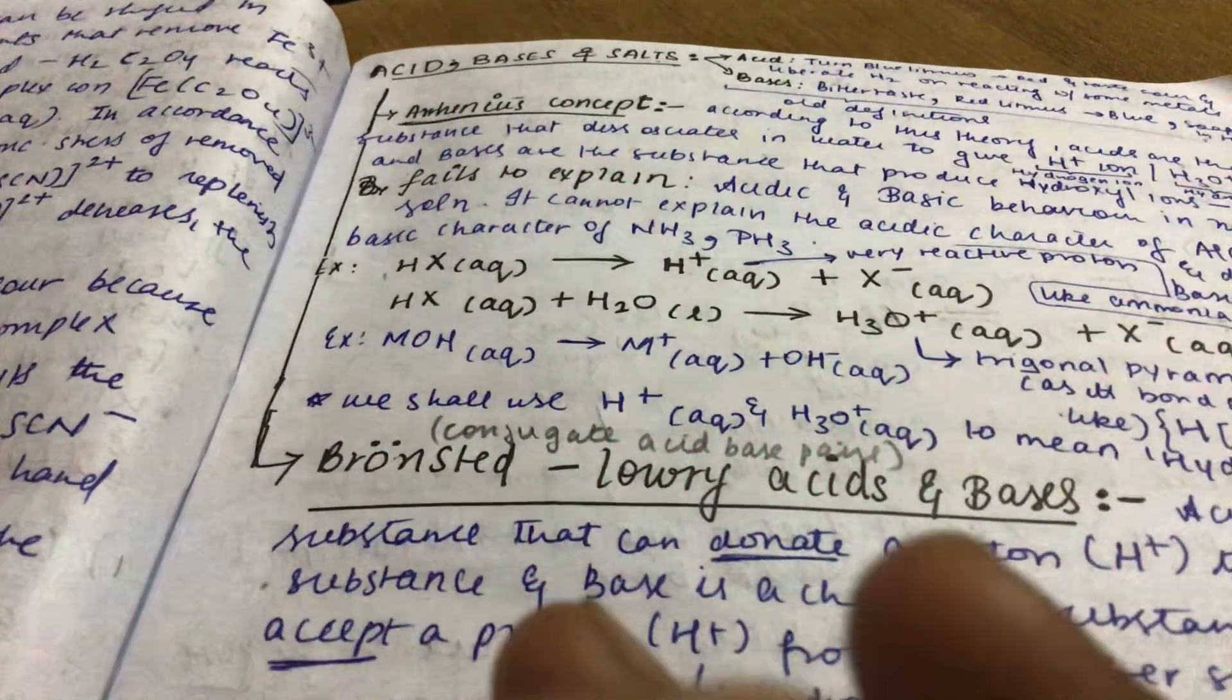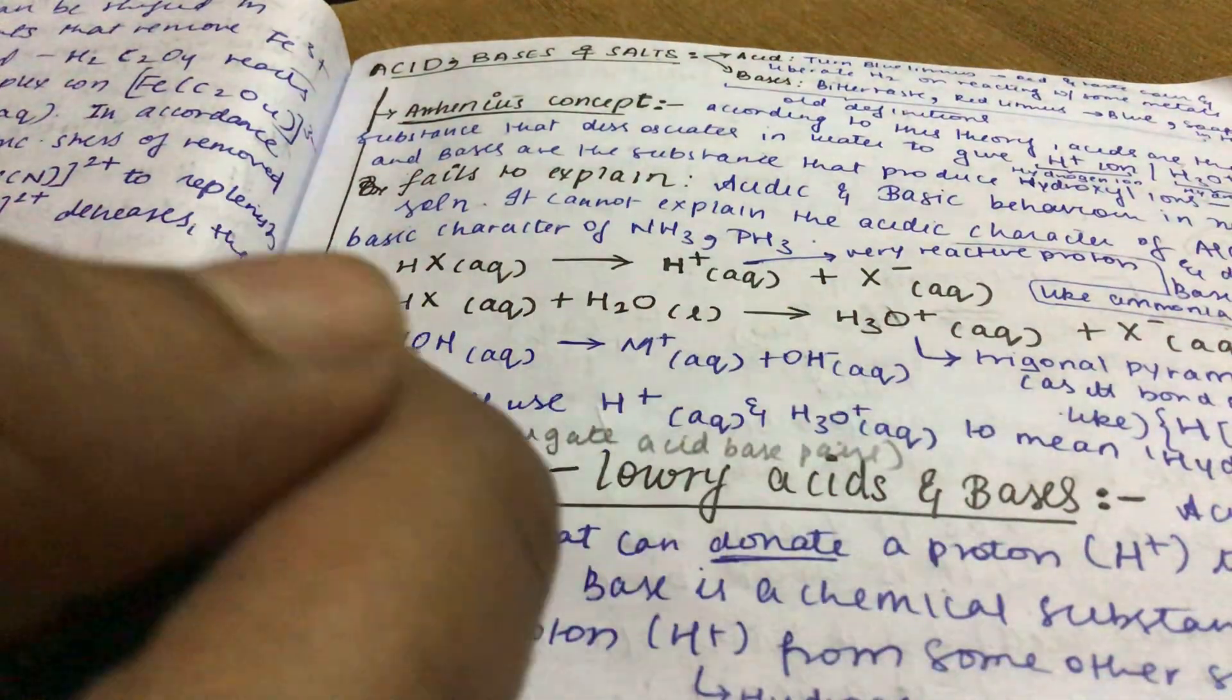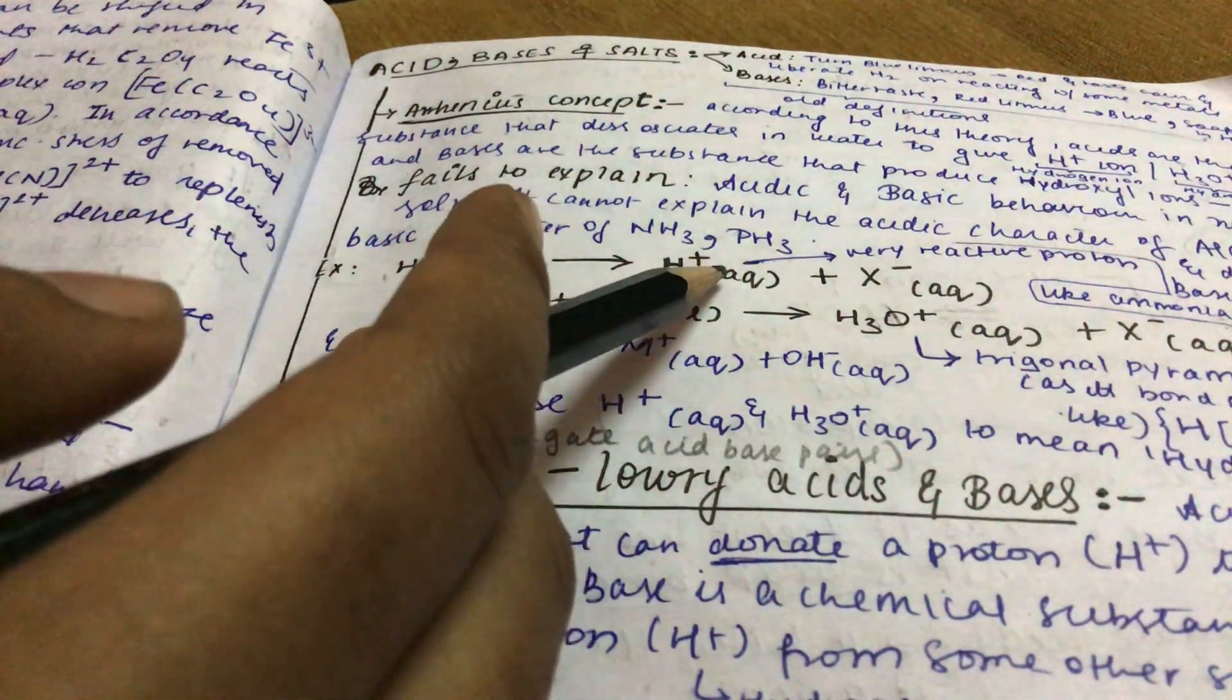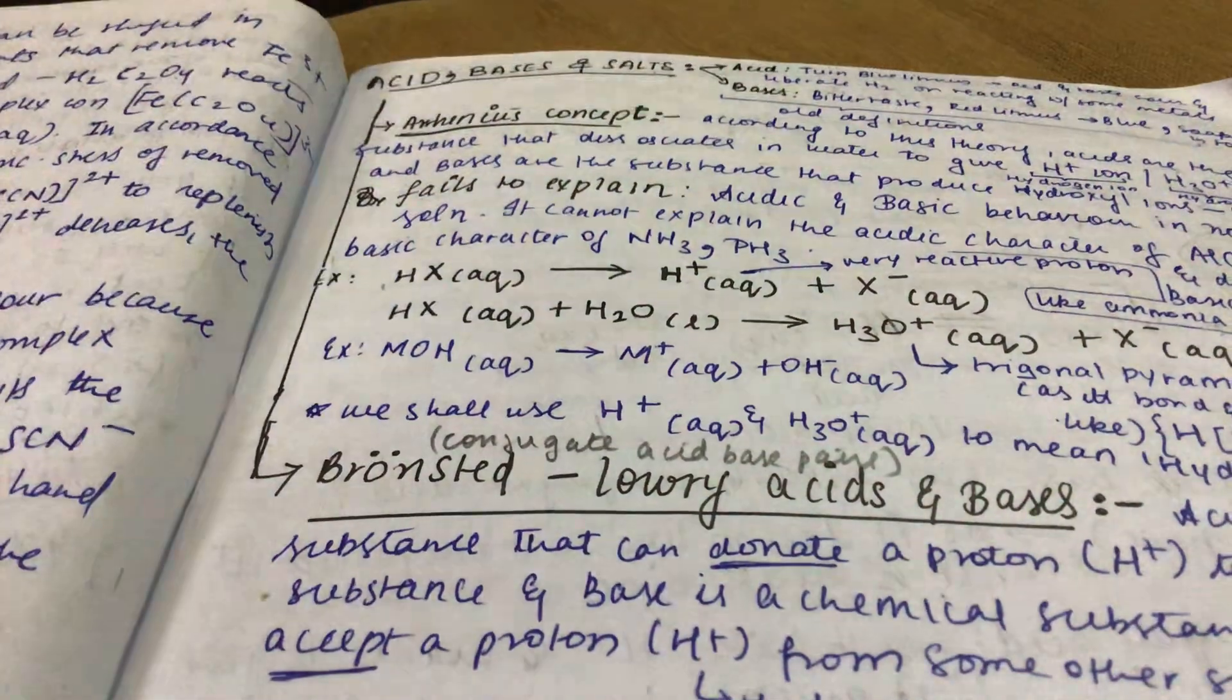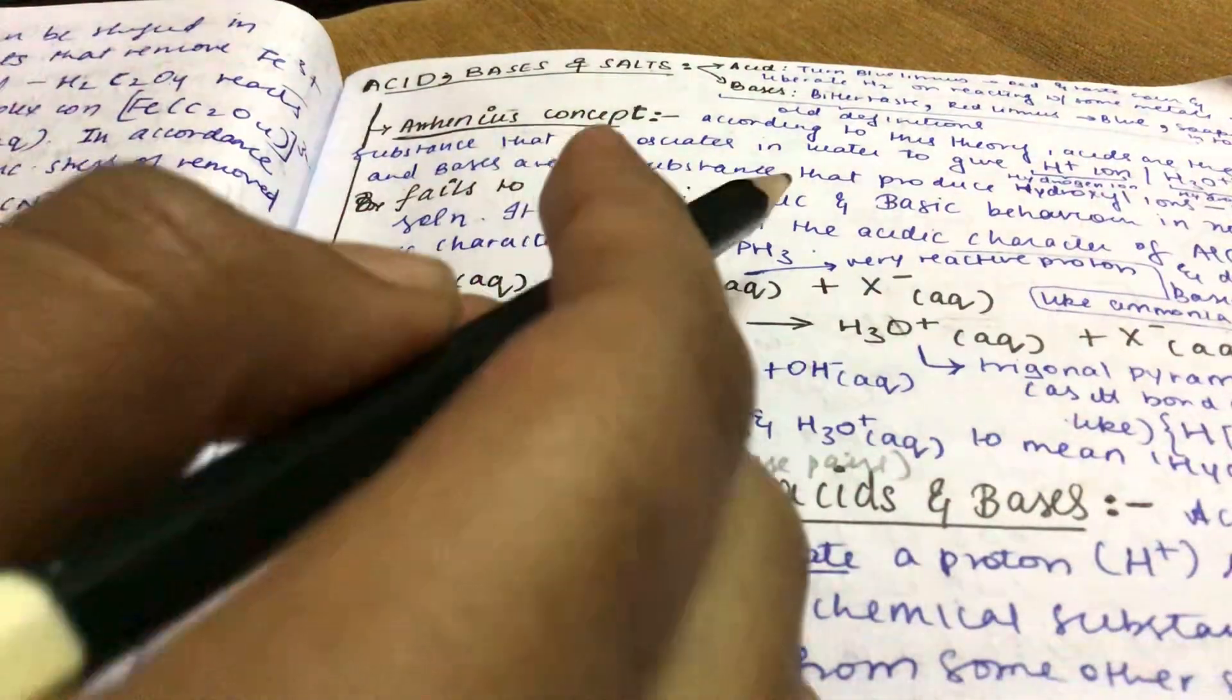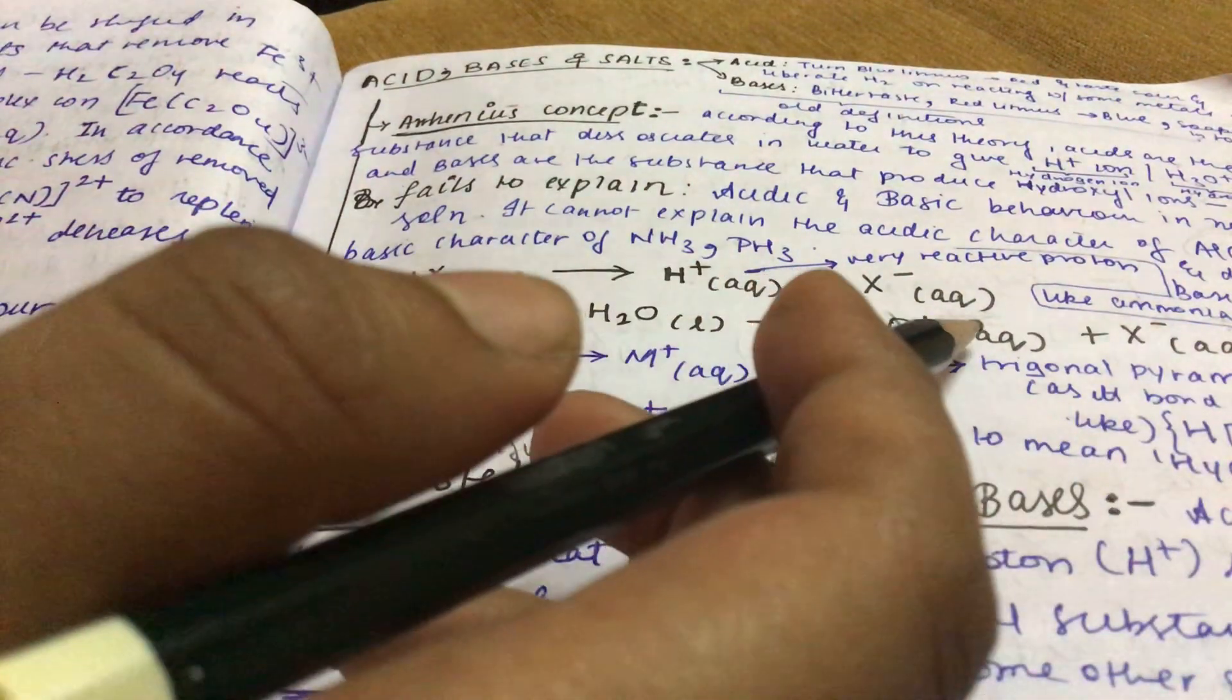This is a highly reactive proton. HX breaks into H plus and X minus. Since H plus is very reactive, it reacts with H2O to form H3O plus.